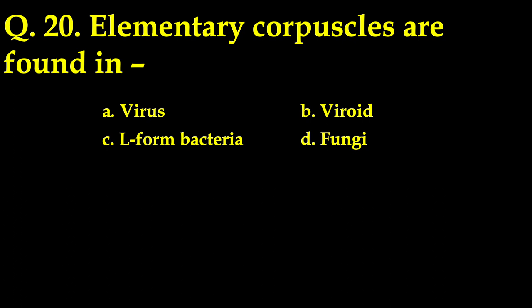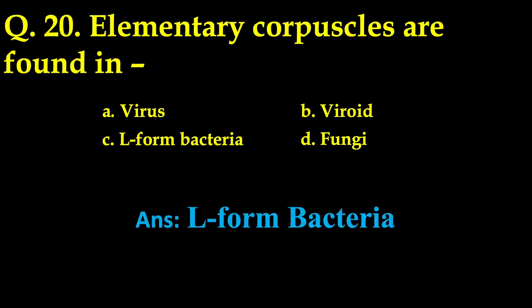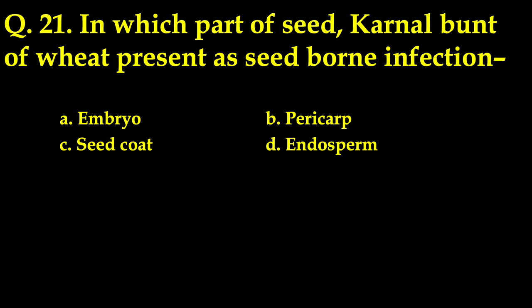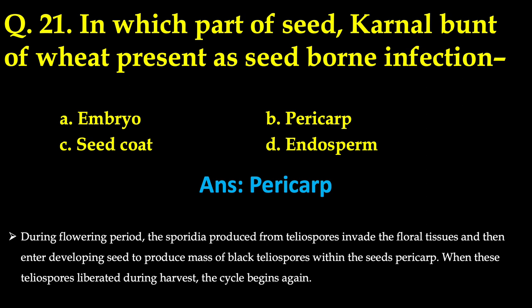Elementary corpuscles are found in — there were four options, and the answer is alpha bacteria. Another question: in which part of the seed kernel is the wheat pathogen present as seed-borne infection? The answer is pericarp. During flowering, sporadia produced from teliospores invade the floral tissue and enter the developing seed to produce a mass of black teliospores within the seed pericarp. When teliospores are liberated during harvest, the cycle begins again.